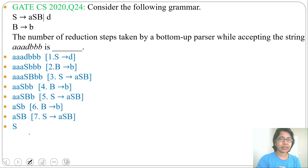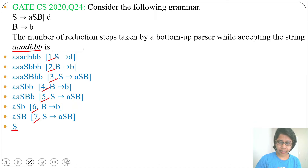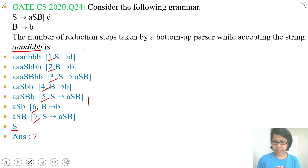So counting the reductions: 1, 2, 3, 4, 5, 6, 7 — total 7 reductions. From this string, by doing 7 reductions, we are reaching the start symbol. So the number of reductions will be 7. This is one way we solved it using the sentential form.